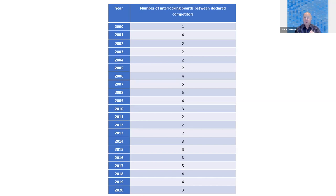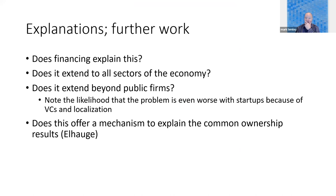In each of these numbers every year, we've got companies who write a 10-K saying our primary competitive threat is company X, and we also turn out to share a board member with that company X. We think this is a problem. There's a lot to be done to think about why it's a problem, what we might do about it. But we want to start with the question of what explains it.